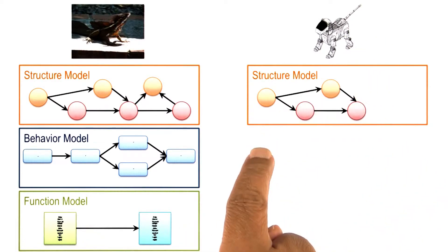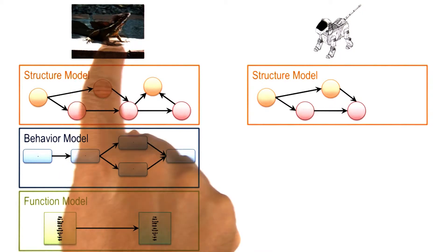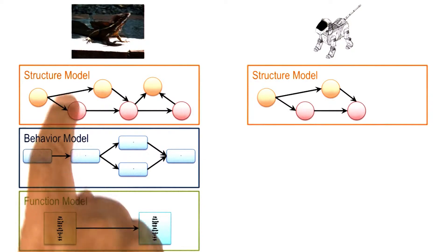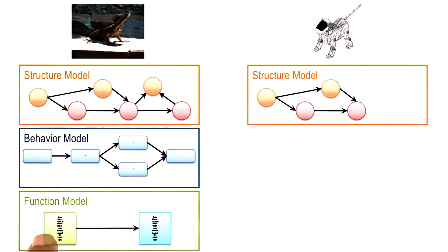We now have the design of a robot that can walk on ground, and we have the design of a biological organism, the basilisk lizard, that can walk on water. For the basilisk lizard, we also have a complete model, a complete explanation of how its structure achieves its function.